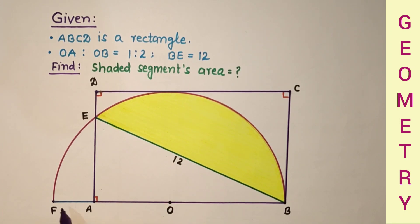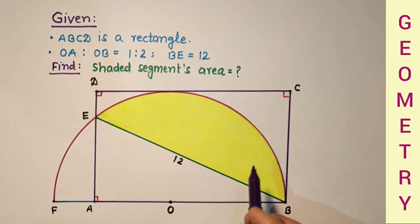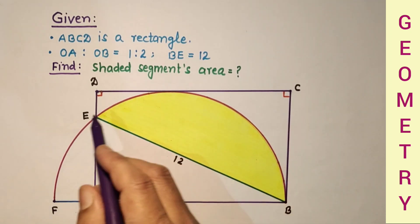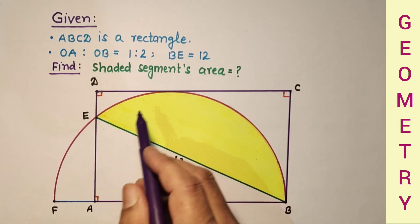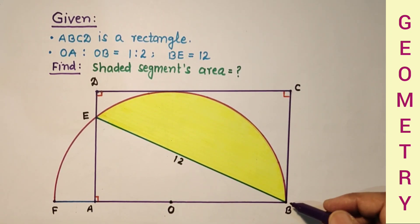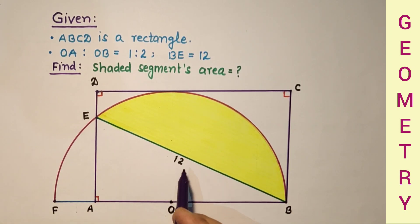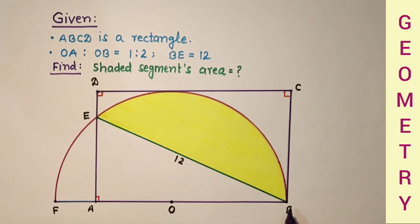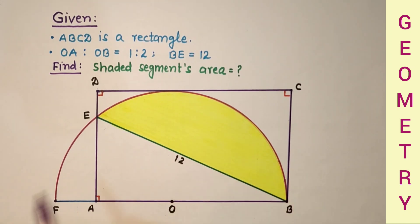A semicircle is drawn with O as the center. ABCD is a rectangle, where side CD is touching the semicircle and CB is also touching the semicircle. Given that the length of segment BE is 12 units and OA to OB is 1 to 2. We have to find the shaded segment's area.